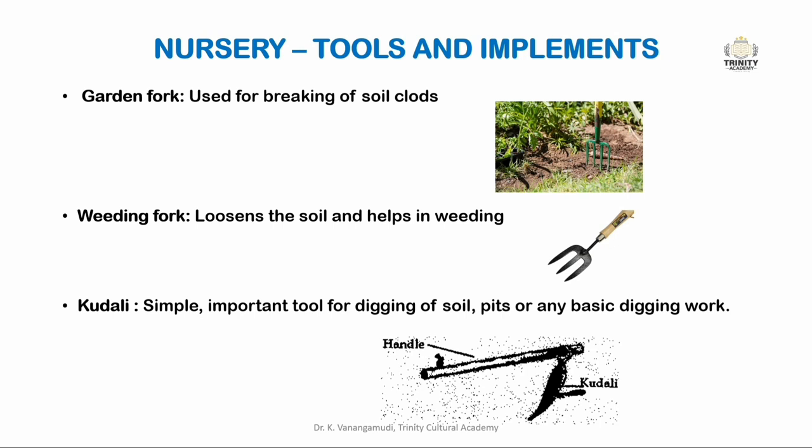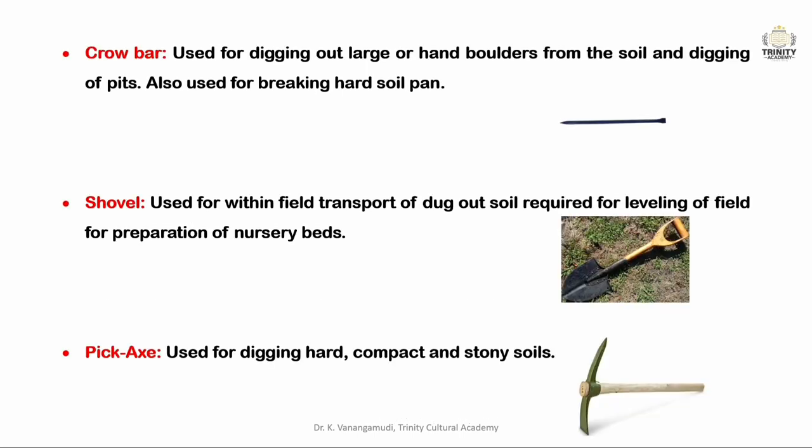The weeding fork is drawn manually with the help of a handle to collect weeds. The third one is kudali, a simple and important tool used for digging soil and pits. It has a metal iron blade attached to a wooden handle and is operated manually.